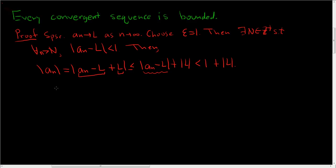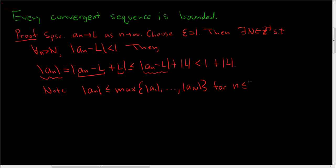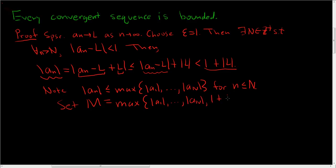To finish the proof, we need to find a bound for n less than or equal to capital N. The absolute value of a sub n is less than or equal to the maximum of these finitely many terms for n less than or equal to capital N. So we set M to be the maximum of those terms and 1 plus the absolute value of L.